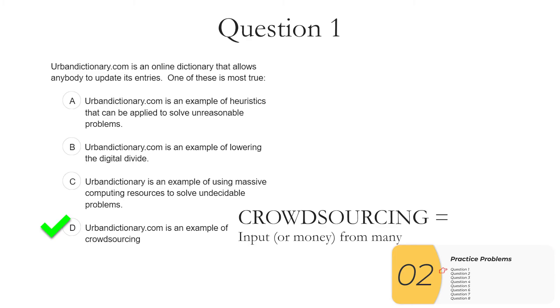We can see the D is our answer. D, urban dictionary is an example of crowdsourcing. With the AP board, you want to remember that these definitions are narrow. So you don't want to see things that aren't really there. Heuristics, parallel computing, undecidable problems have nothing to do with getting input from many, many, many people.